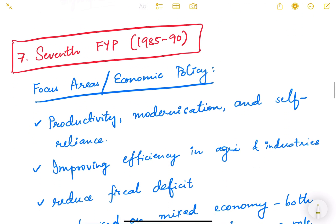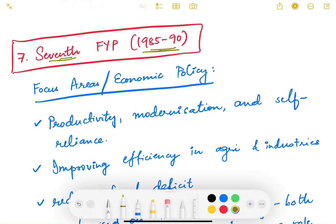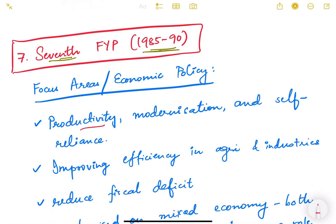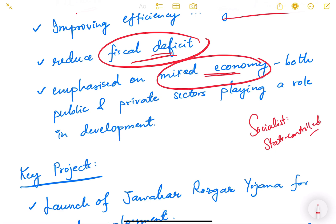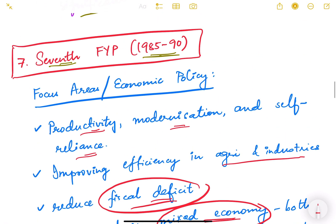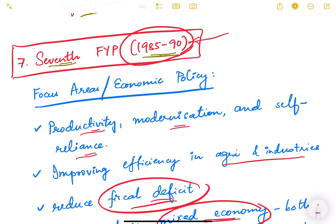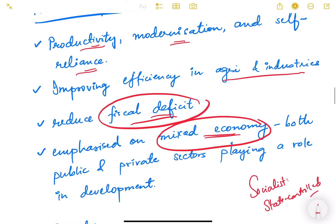Let us now move on to the seventh five year plan, from 1985 to 1990. The focus areas were improving productivity, modernization, and self-reliance, improving efficiency in agriculture and industry, and reducing fiscal deficit. There was also an emphasis on the mixed economy — till this point we had focused on a more socialist model where everything was state controlled. Now we were giving some role to the private sector as well. This period of 1985 to 1990 marked early privatization.